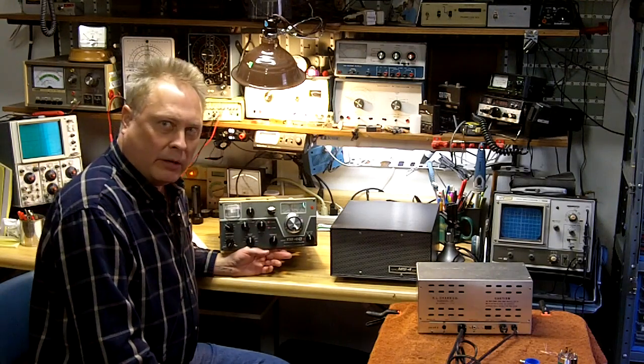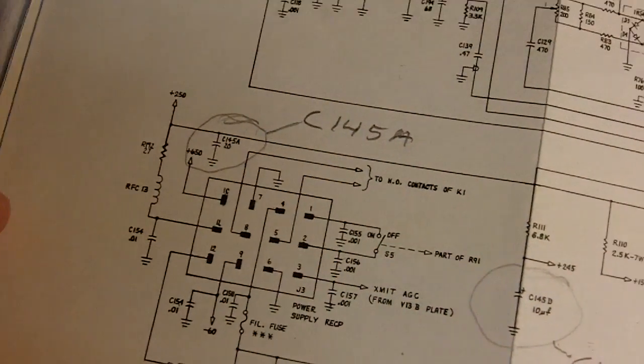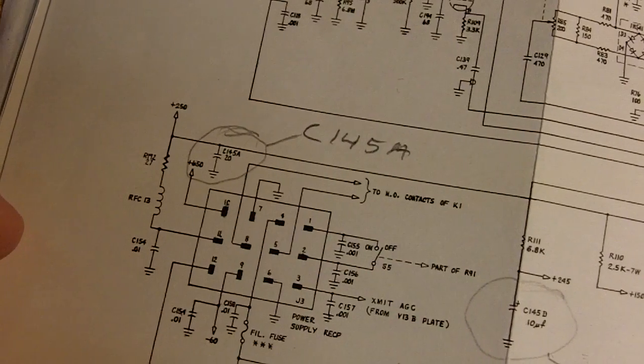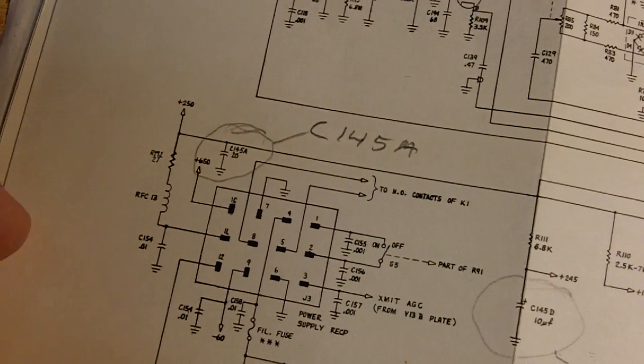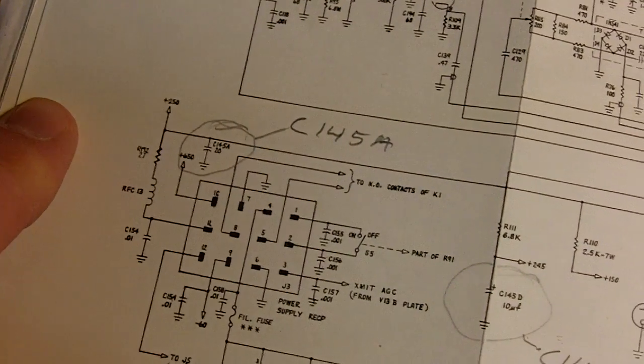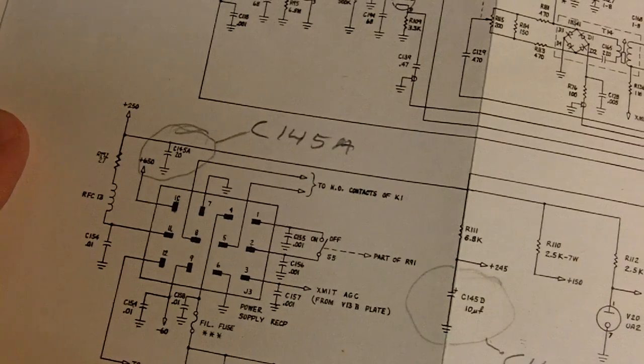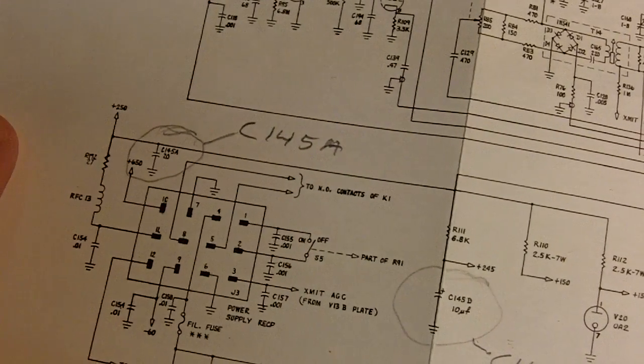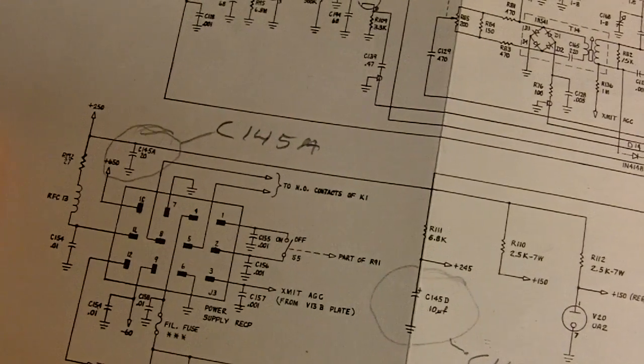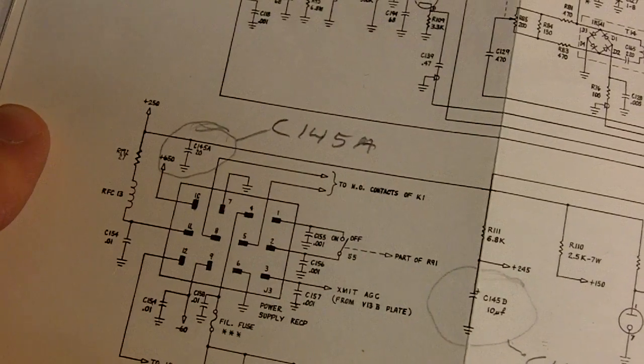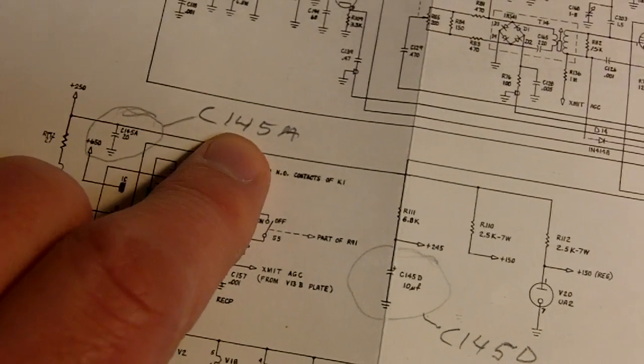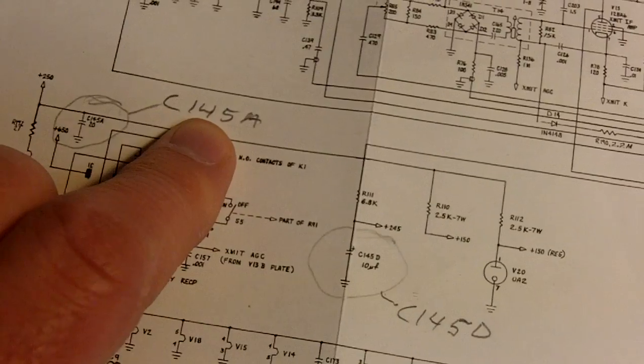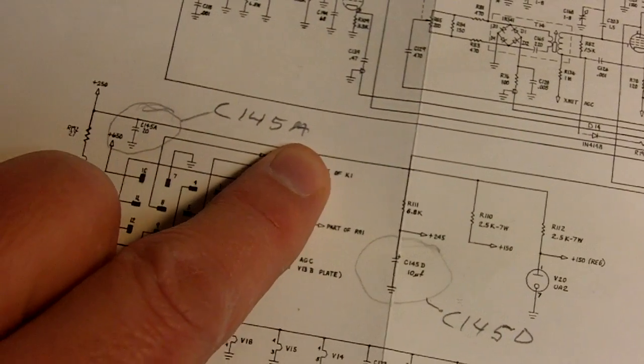I'll just show you the ones I'm going to replace here. I will be replacing five capacitors all electrolytics and this is the diagram of the Drake. Four of those capacitors are all mounted inside of one package. It's a multi-section capacitor so it's labeled as capacitor C145 but they divide it up into sections like A, B, C, and D.